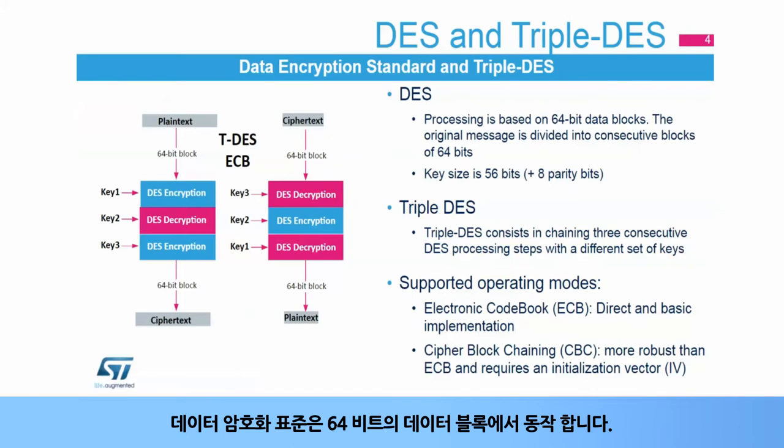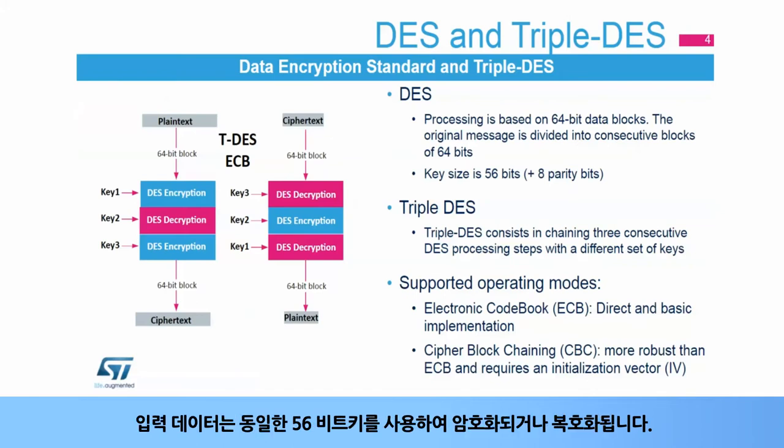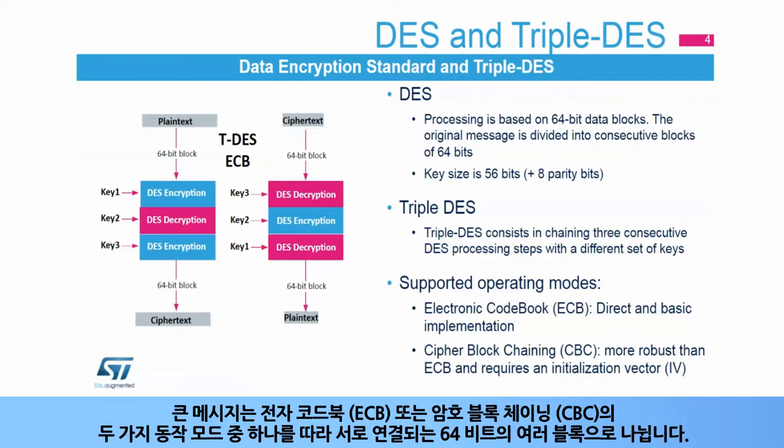Data Encryption Standard works on a data block of 64 bits. Input data is encrypted or decrypted using the same 56-bit key. Large messages are divided into several blocks of 64 bits that are chained together following one of two modes of operation: Electronic Codebook, or ECB, or Cipher Block Chaining, or CBC.